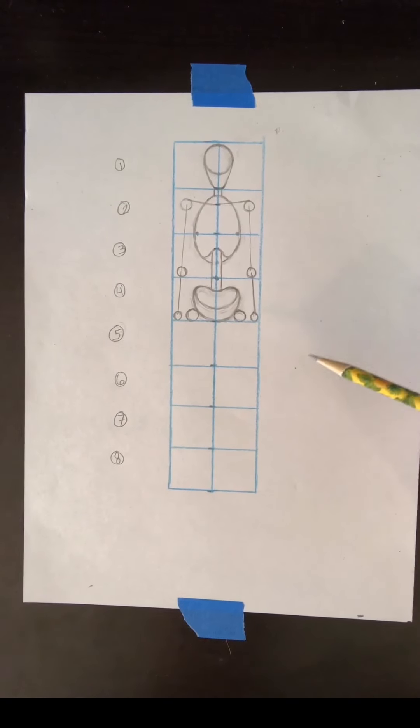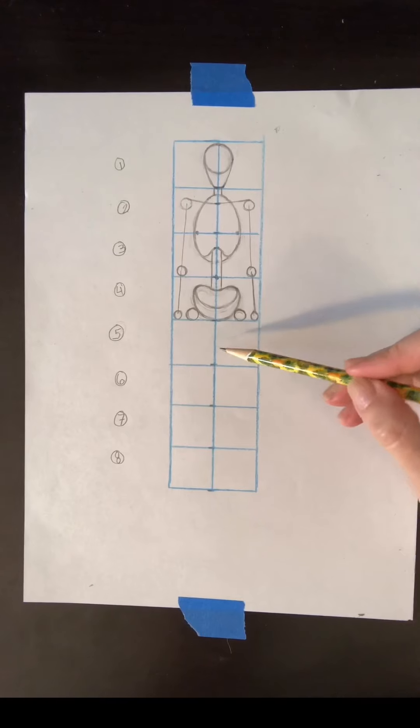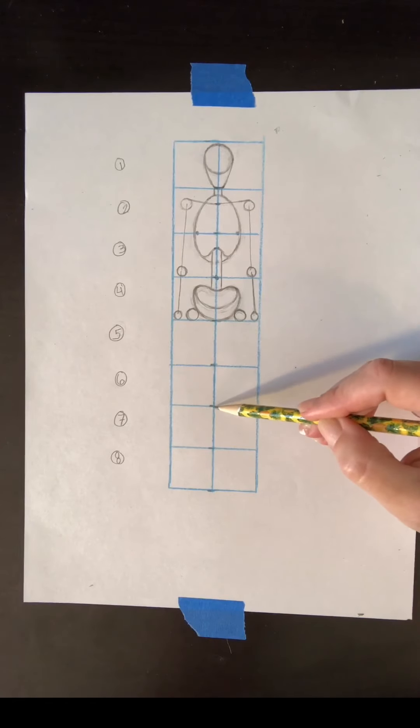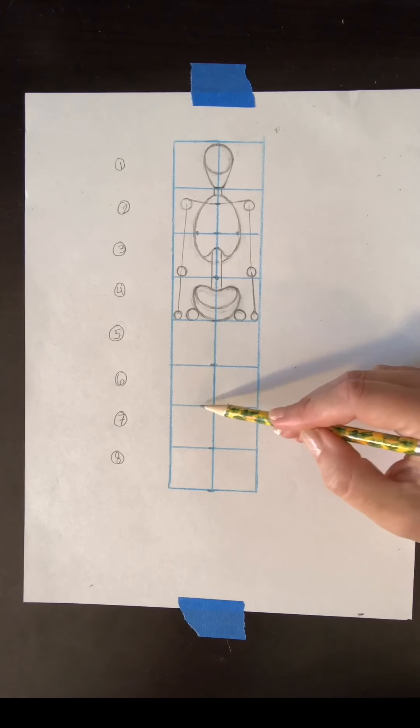There's not a major landmark that hits here at the bottom of five heads, besides the center thigh. So we're going to skip down to the bottom of the sixth head. And what goes there is the bottom of your knee, this is basically where your knee bends.